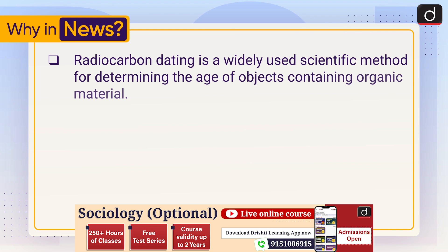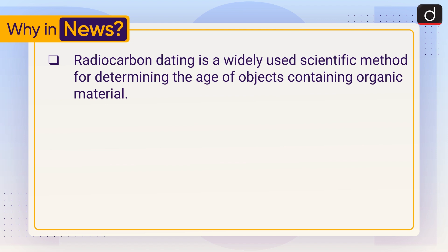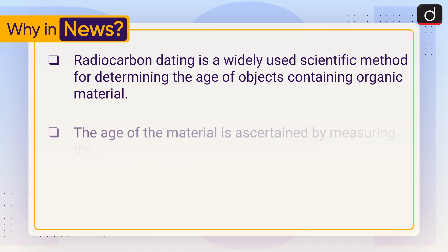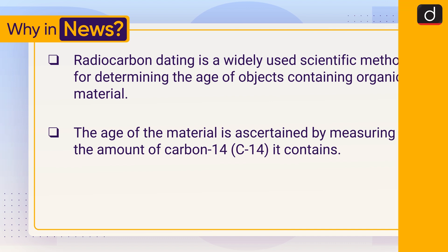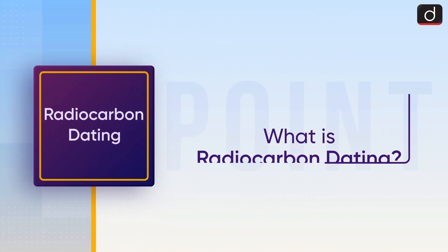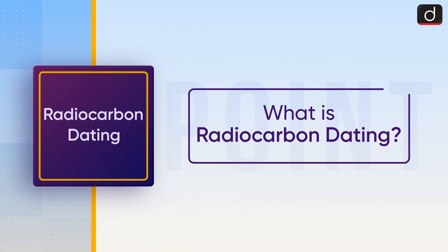Radiocarbon dating is a widely used scientific method for determining the age of objects containing organic material. The age of the material is ascertained by measuring the amount of carbon-14 (C14) it contains. Now let's discuss what radiocarbon dating is.